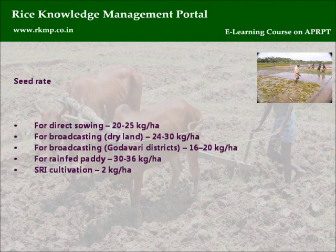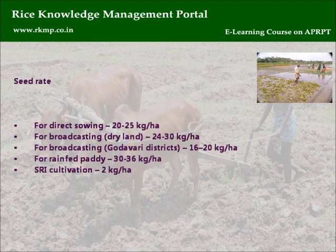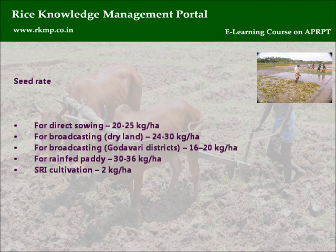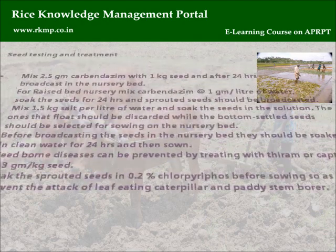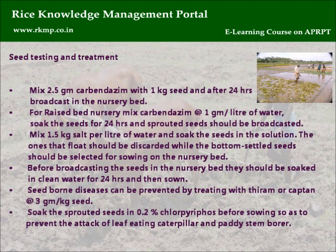Seed rate: For direct sowing, 20 to 25 kg per hectare. For broadcasting dry land, 24 to 30 kg per hectare. For broadcasting in Godavari districts, 16 to 20 kg per hectare. For rain-fed paddy, 30 to 36 kg per hectare. SRI cultivation: 2 kg per hectare.